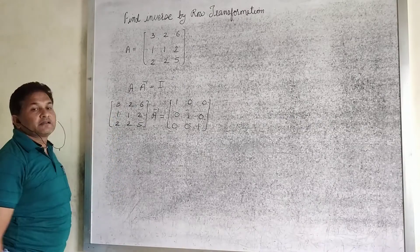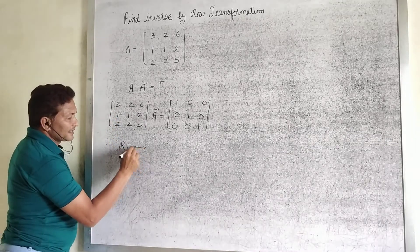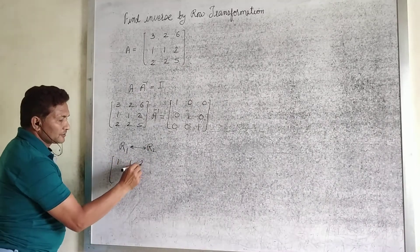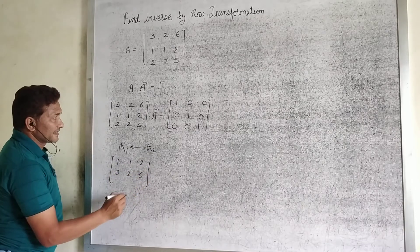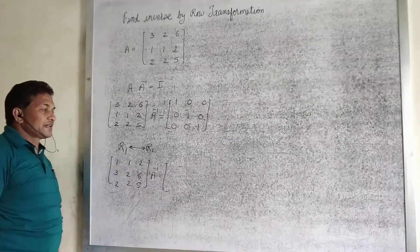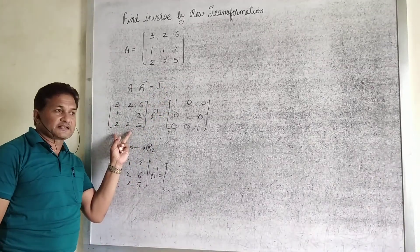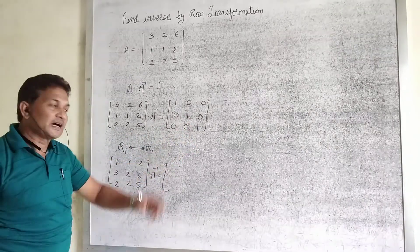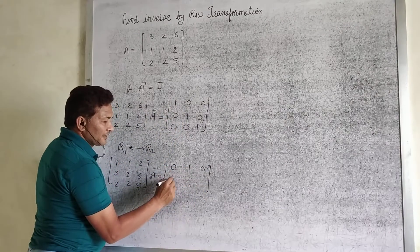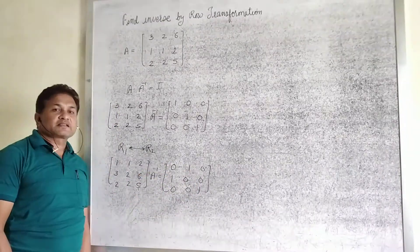To convert A into the identity matrix, the first element must be 1, but here it is 3. Hence we interchange two rows — specifically the first and second rows. After interchanging, the matrix becomes: row 1 = 1, 1, 2; row 2 = 3, 2, 6; row 3 = 2, 3, 5. The same row interchange operation is also applied to the identity matrix side, giving 0, 1, 0 / 1, 0, 0 / 0, 0, 1.